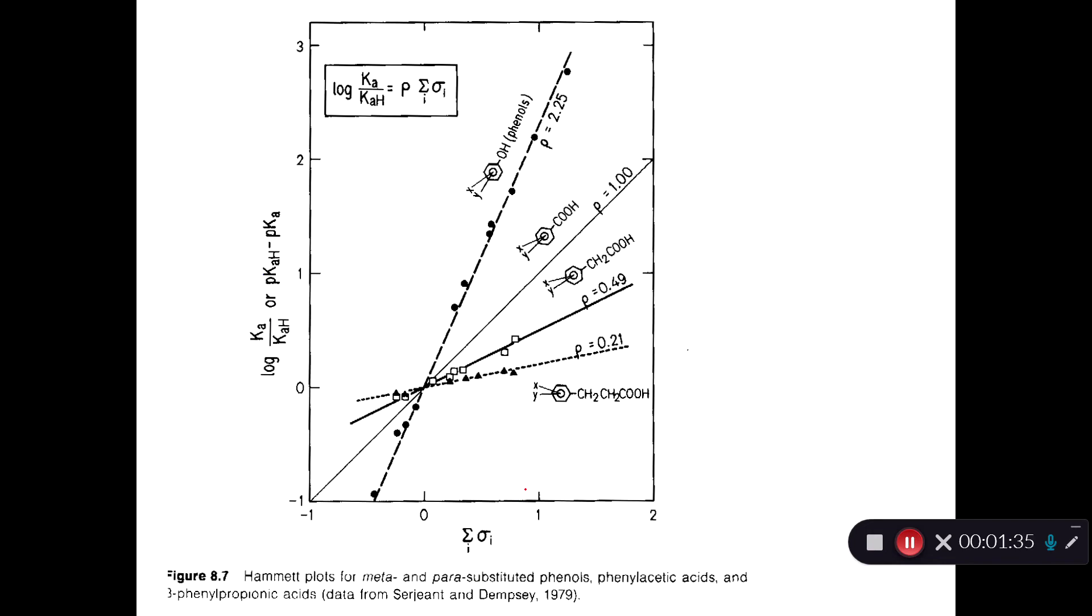So here's an example, and I think I showed this plot before. So here's the pKa of the substance you're interested in divided by the pKa of the unsubstituted compound. So the difference between the two. So pKa H minus pKa. And you can see that they're plotted versus the sum of the Hammett constants. That's the sigma values.